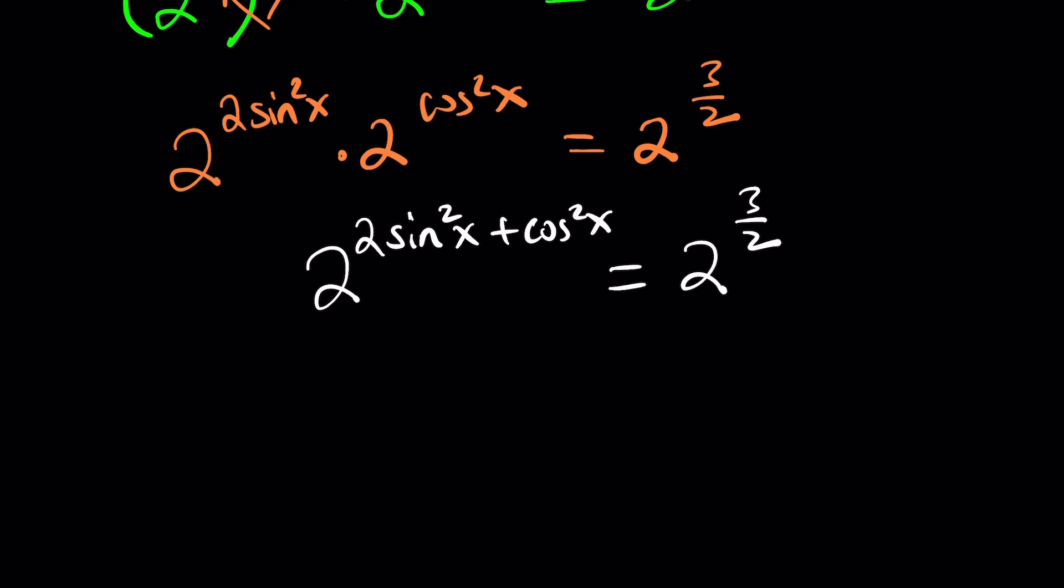Now we have the same base, so we kind of have something like this: a to the power x equals a to the power y, or a to the b, a to the c, whatever you call it. Maybe not use x because we're already using x here. Maybe use b and c. This implies b equals c, right?